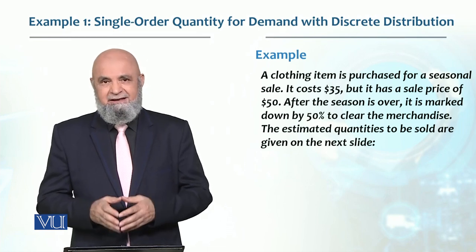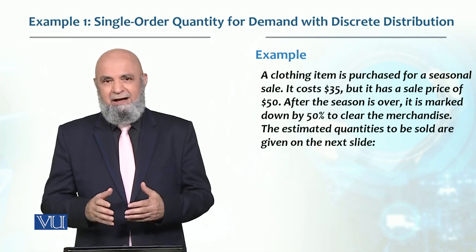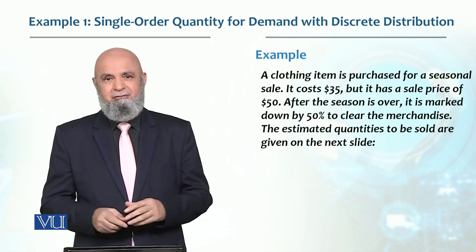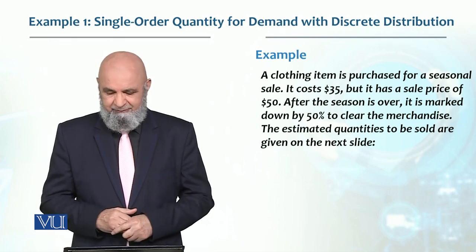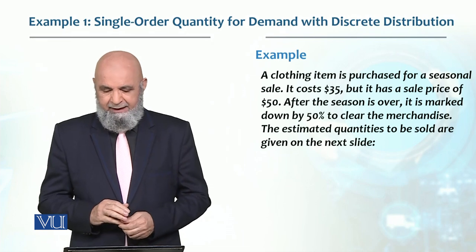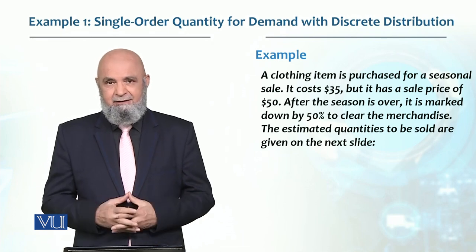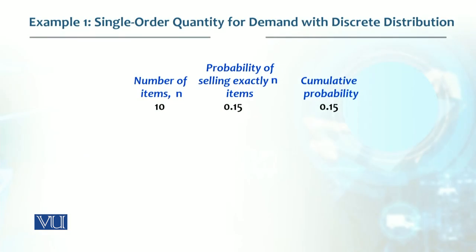This means the marked-down price becomes $17.50, which is 50 percent of $35. In this case, we have calculated how to figure out the order size. The data is over a period, and the particular item baseline is 10 items.